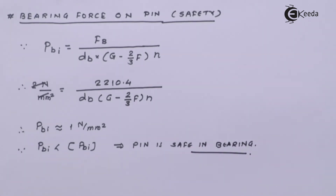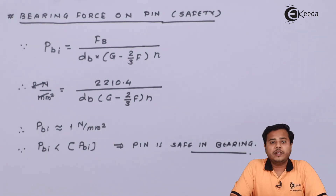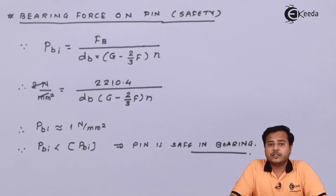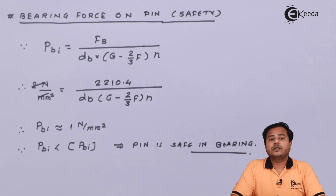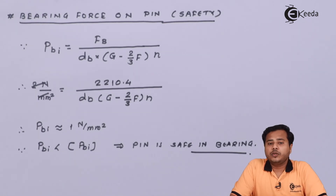We have now done the safety checking across all the selected parameters. The conclusion is that the selected coupling, based on the given conditions and material properties, is safe. To quickly revise: we first selected the material properties, based on which we selected a prime mover, then selected the flexible bush pin type coupling, chose its standard parameters, and verified that all those parameters are safe. That concludes module number 5.